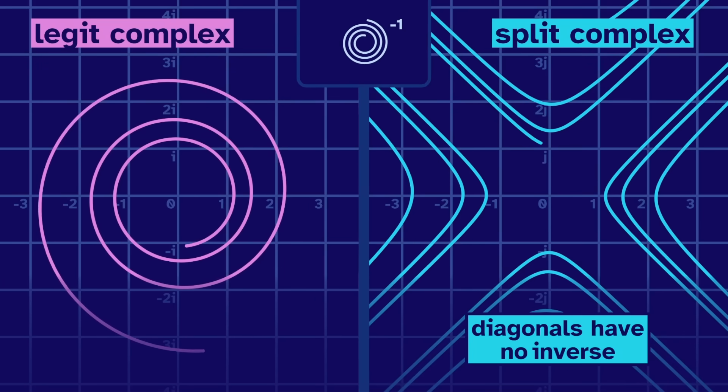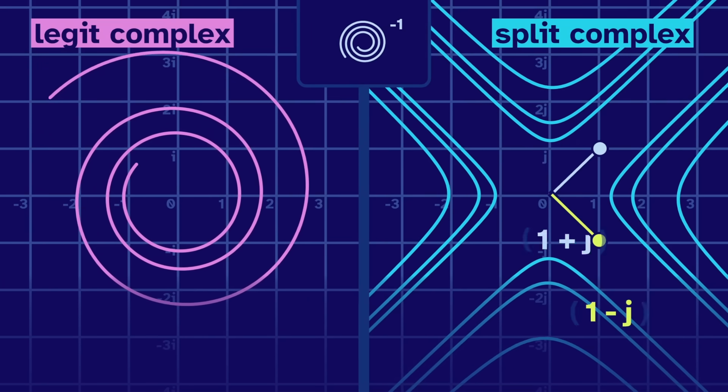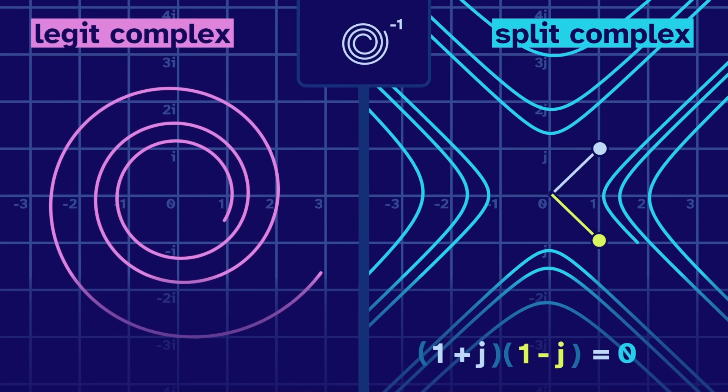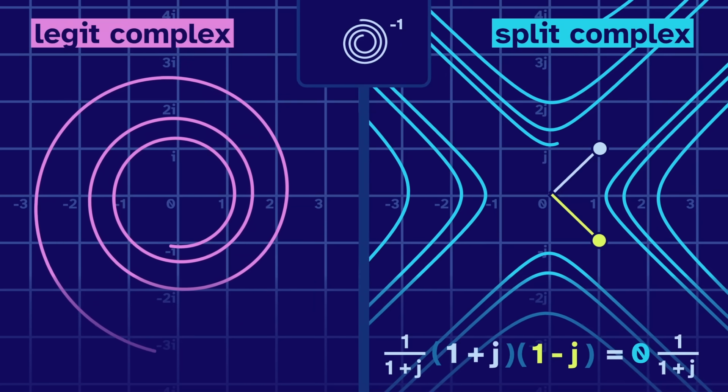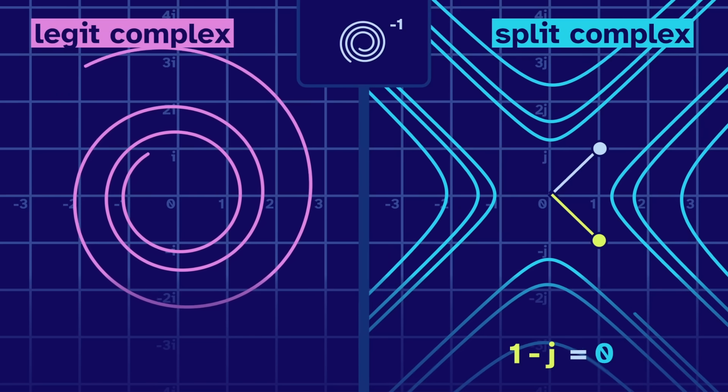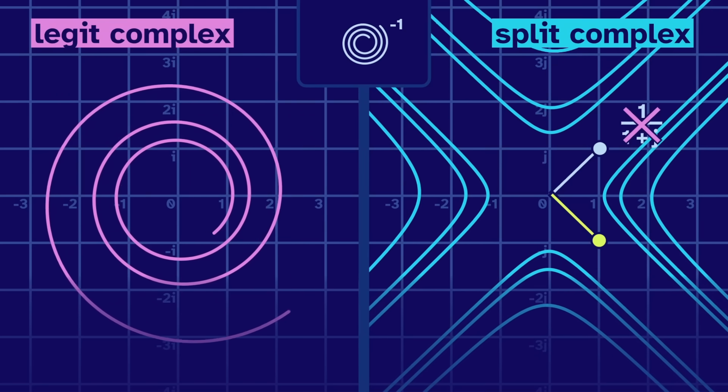To see why, let's take the diagonal numbers 1 plus j, and 1 minus j, then multiply them. We do a little alge, then end up with zero. So if 1 plus j had an inverse, these would cancel, but then we get 1 minus j equal to zero, which is not true. The inverse of a diagonal can't exist.